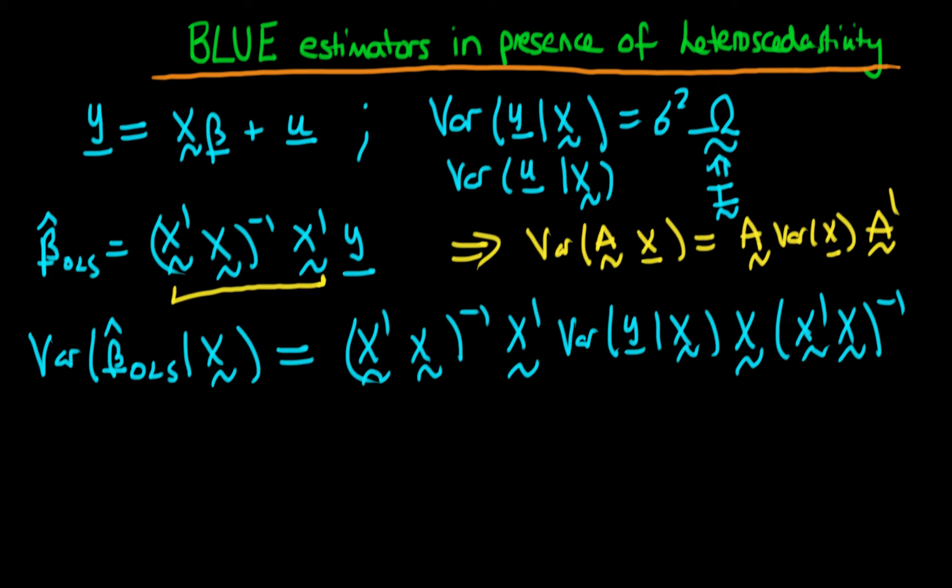Our variance of beta hat OLS given that we have our matrix of our independent variables x is just equal to x prime x to the power minus 1 times x prime, or then it's going to be just sigma squared times i. So I'm actually going to take the sigma squared out because it's just a constant and put it at the front.